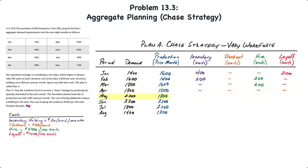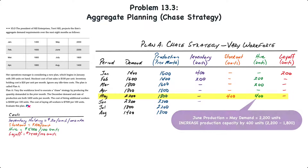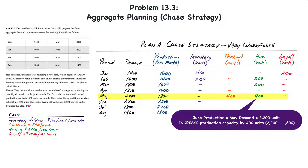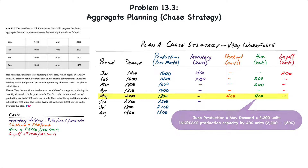In May, production is 1,800 units but demand is 2,200 units. There is no beginning inventory, so the company will stock out by 400 units — the difference between 2,200 demanded and only 1,800 units available. June's production will equal May's demand of 2,200 units. Since current production in May is 1,800 units, that requires hiring the equivalent of 400 units of additional workforce — four employees. That hiring cost is incurred in May.